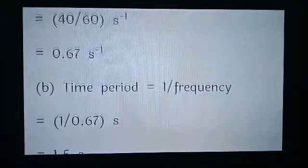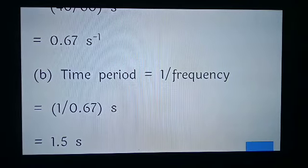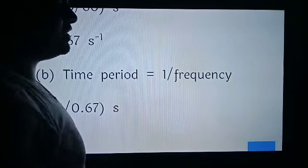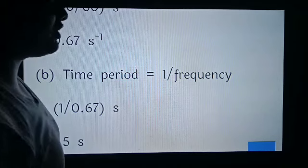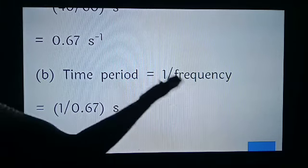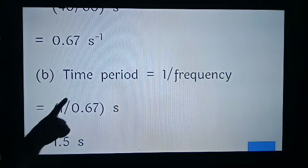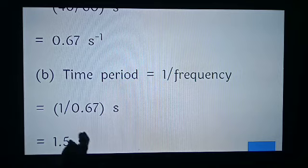For the second part of this question, the time period. The time period has a relation with frequency: time period is equal to 1 upon frequency. Frequency is 0.67 per second, so the time period will be 1 upon 0.67, that is equal to 1.5 seconds.